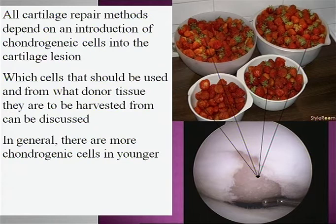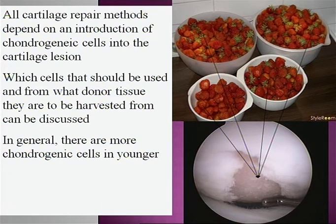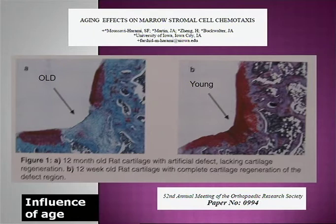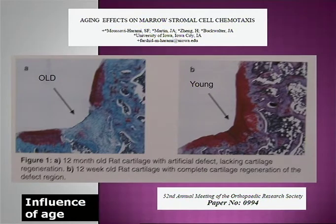One could say that all cartilage repair methods depend on the introduction of chondrogenic cells into the cartilage lesion. Which cells should we use, and from what donor tissue they are harvested, we could discuss for months. But in general, there are more chondrogenic cells in younger patients. We can see this young patient — actually a rat — has a very nice repair, while the old rat has a poor repair.